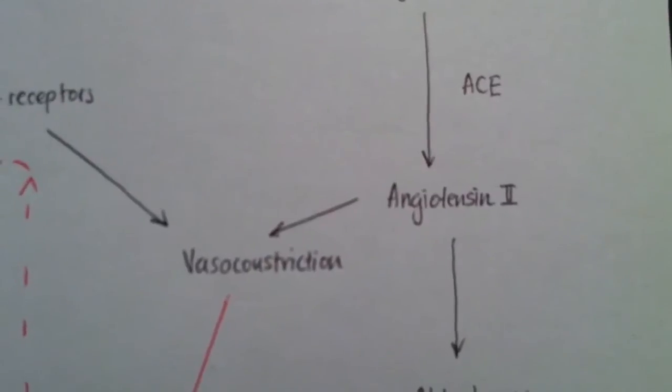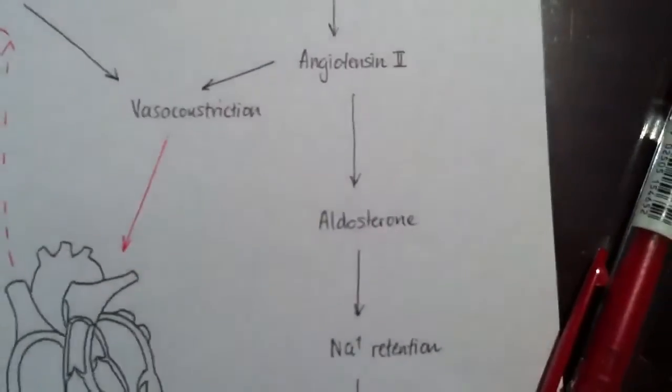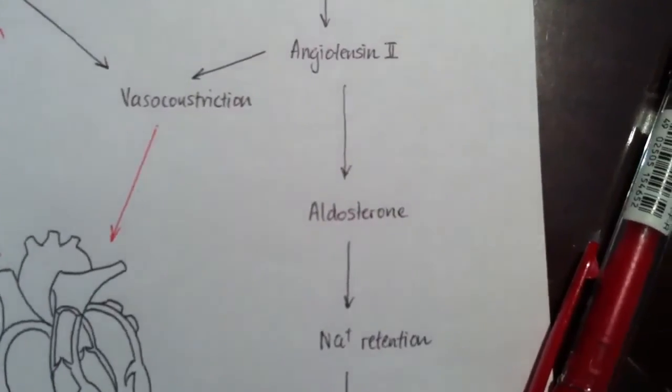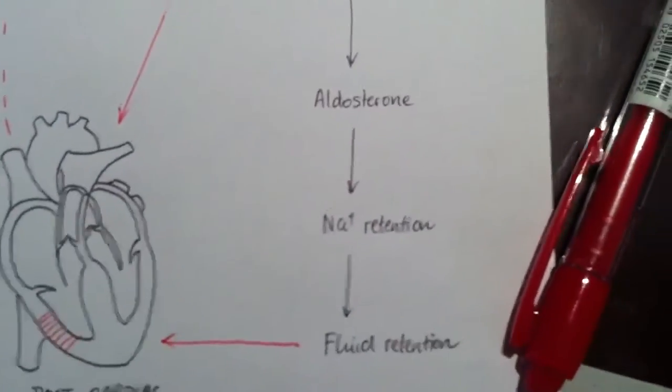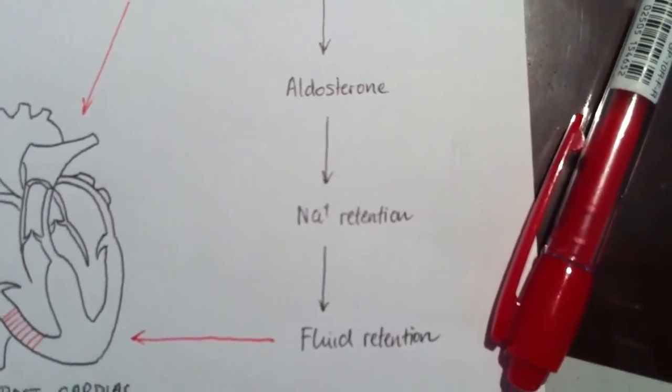Angiotensin 2 has a vasoconstriction effect, and it also helps to release aldosterone. Aldosterone then goes on to cause sodium retention, which causes fluid retention.